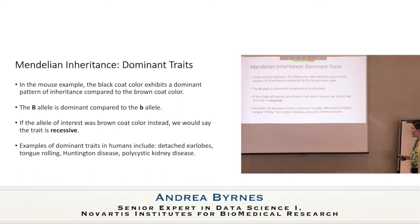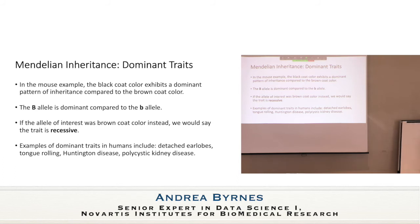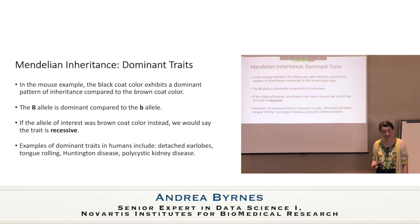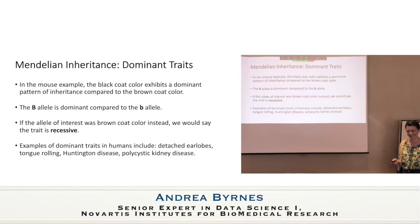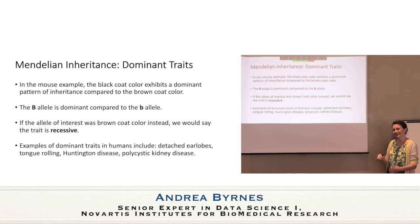Examples of dominant traits in humans include detached earlobes, tongue rolling, Huntington disease, and polycystic kidney disease. Interestingly, earlobes and tongue rolling are actually complex traits — a lot of what we're told in high school is more complicated. Eye color too: someone's 23andMe predicted detached earlobes and was wrong. It's either a complex trait, the causal variant wasn't typed correctly, or the imputation is wrong — a conversation for later.